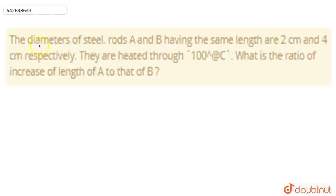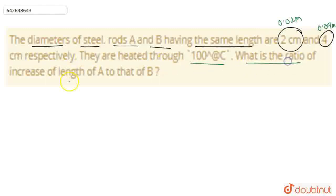Hello everyone! The diameters of steel rods A and B having the same length. The diameter is 2cm for rod A and 4cm for rod B. We need to convert these to meters. Now, they are heated through 100 degrees Celsius. What is the ratio of increase of length A to that of B?